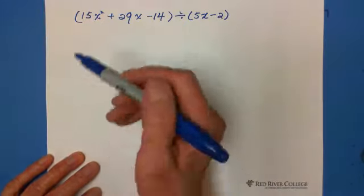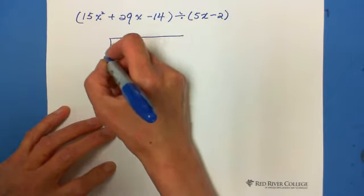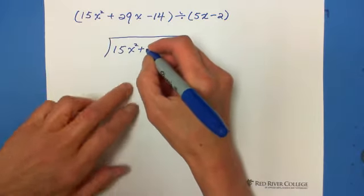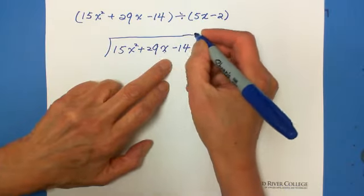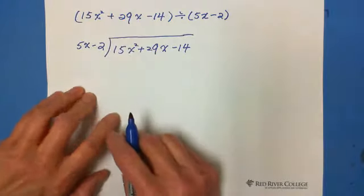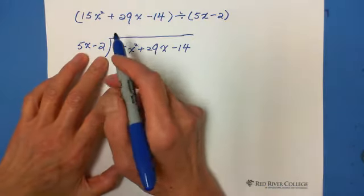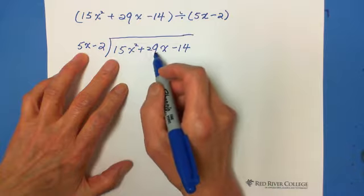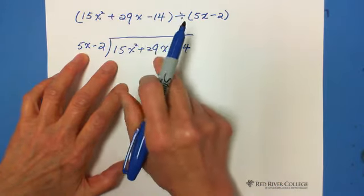Second step, then we write in the vertical form: 15x² + 29x - 14 divided by 5x - 2. So because this is binomial, we need to divide it by this one, 15x² + 29x divided by 5x - 2. Two terms matching two terms.